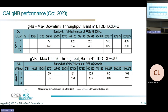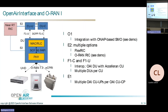I will now continue with a brief tour over the different interfaces in the general ORAN architecture. The O1 interface — not shown in this figure — exists: we started integrating OAI into an ONAP-based SMO, and there's a demo you can see later. Florian already mentioned the E2 agent integrated into Open Air Interface. We've also shown interoperability with OAI's own near-real-time RIC called FlexRIC, and recently achieved interoperability with the ORAN Software Community near-real-time RIC, which will also be demonstrated later.